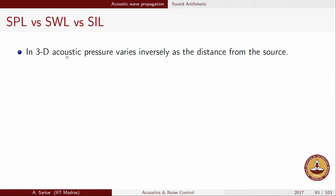For spherical waves, we saw that acoustic pressure varies inversely with distance from the source. This is true for any acoustic process in 3D. As the source is taken further and further from the receiver, the loudness obviously decreases. Therefore, the acoustic pressure level varies with distance from the source — in other words, if you wish to characterize the source using SPL, it also depends upon the receiver location.